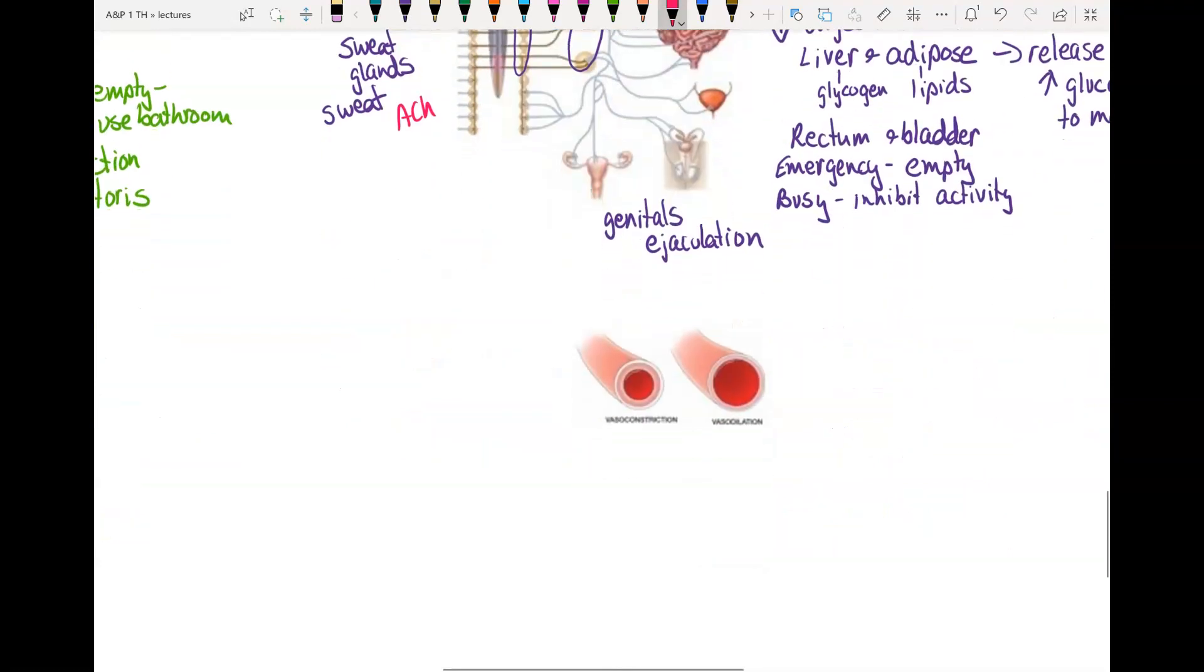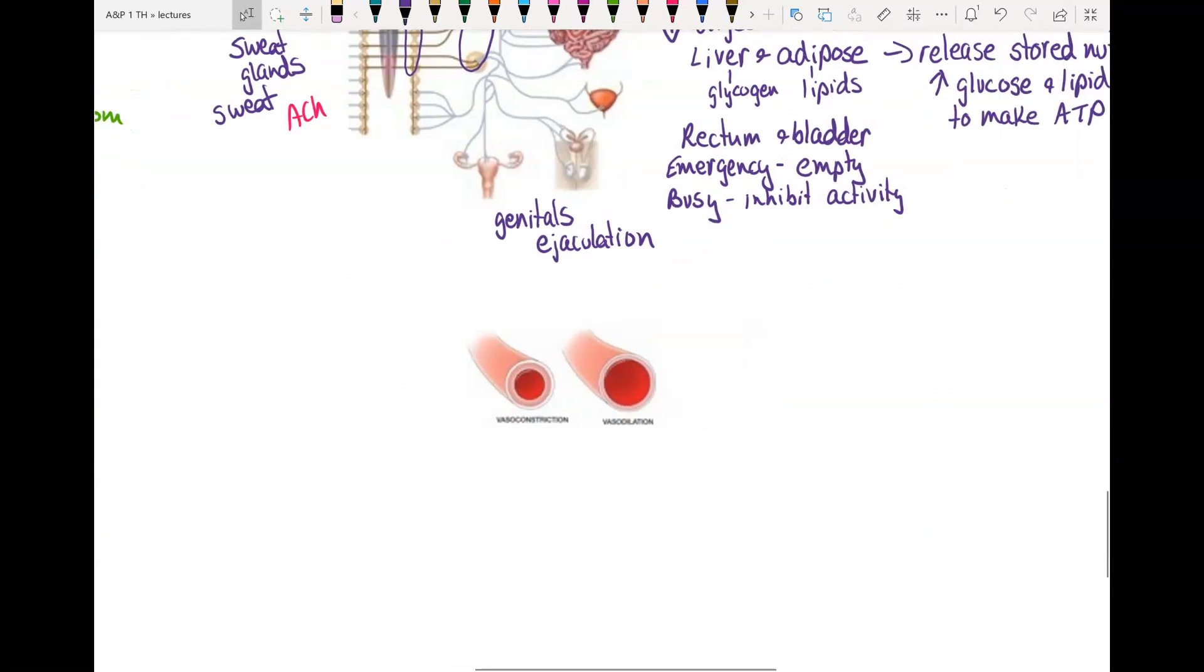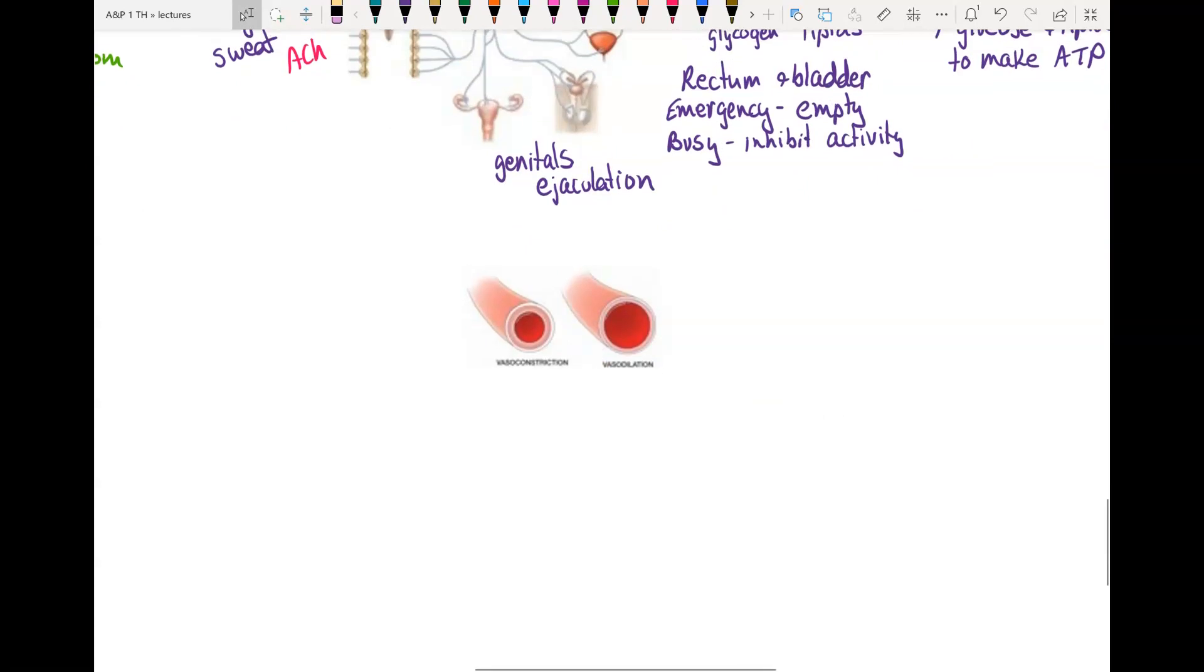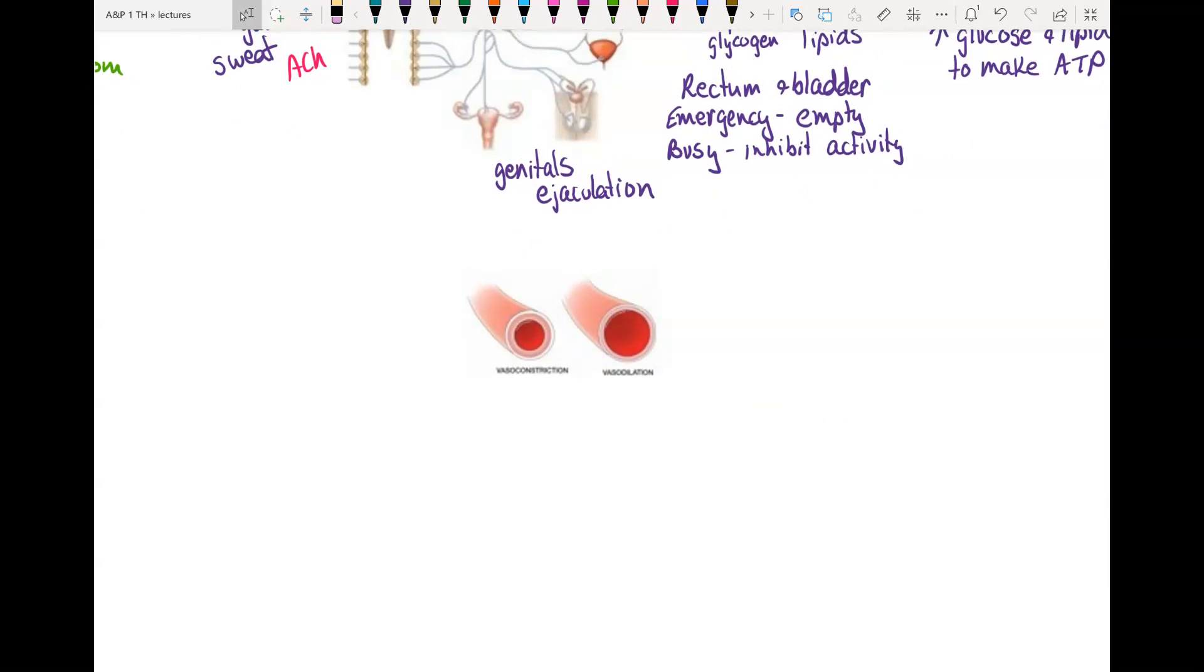Then we have blood vessels. And depending on where the blood vessel is, is if it will dilate or constrict. So sympathetic, remember, if you increase your sympathetic activity, most blood vessels will constrict. The only ones that dilate are the blood vessels in your skeletal muscle.